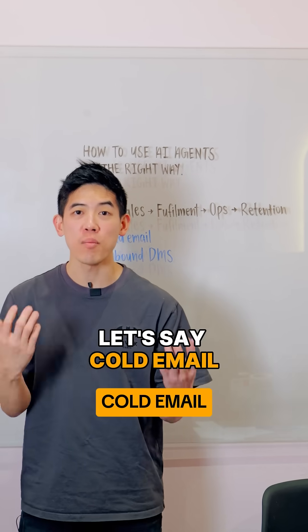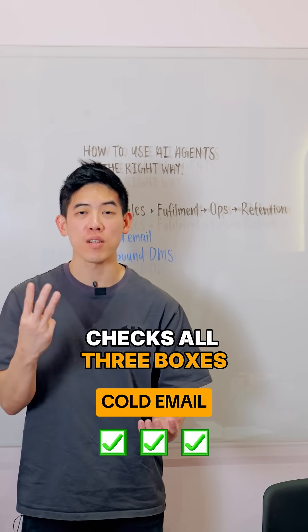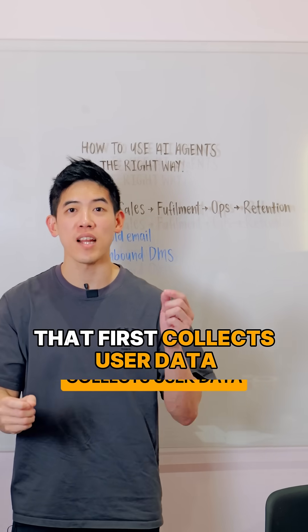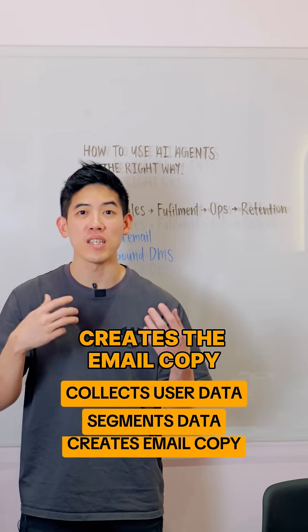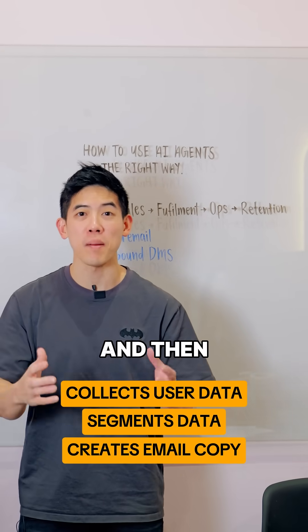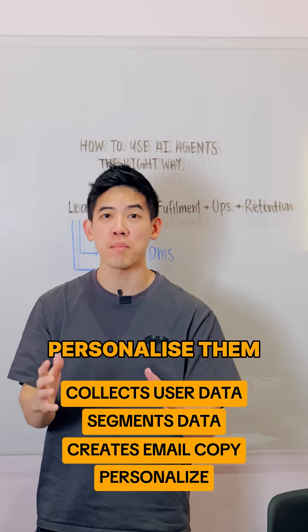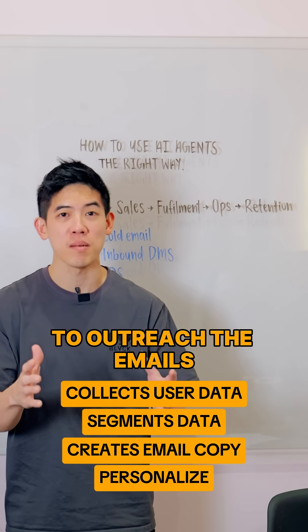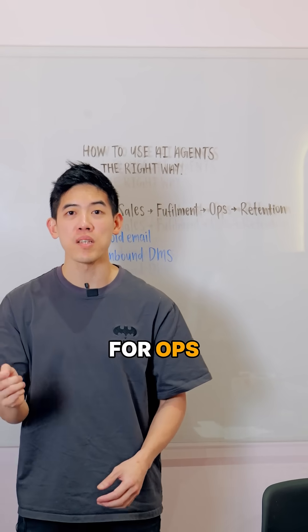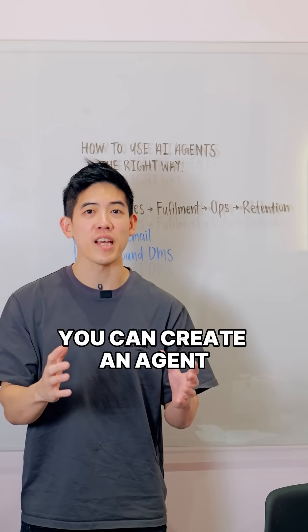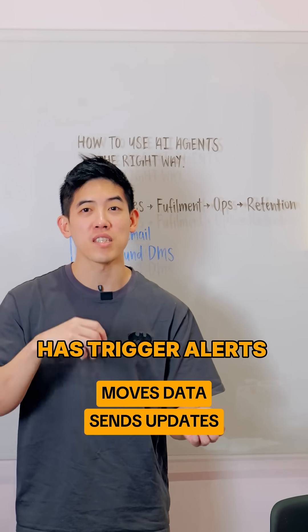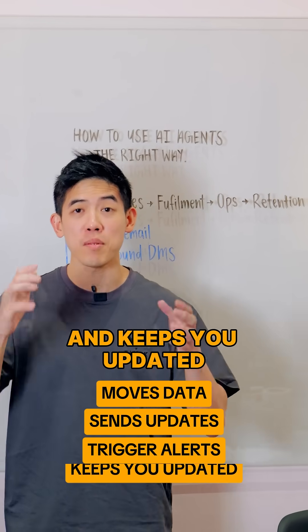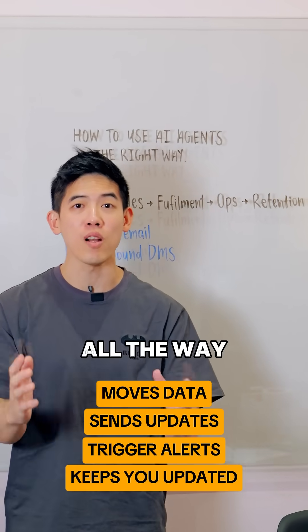Let's say cold email checks all three boxes. Go and create an agent that first collects user data, segments it, creates the email copy, and then personalizes outreach emails. For ops, you can create an agent that moves data, sends updates, has trigger alerts, and keeps you updated all the way.